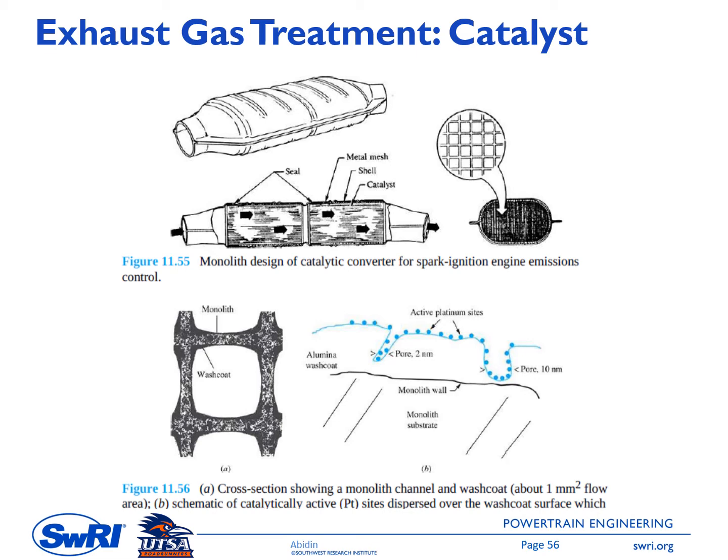An example of a selective catalyst is SCR — Selective Catalytic Reduction — which is used to reduce NOx emissions. Automotive catalysts are heterogeneous catalysts; that is, the active noble metal catalyst material is dispersed over a solid surface. This feature shows an example of the structure and modes of catalyst operation.